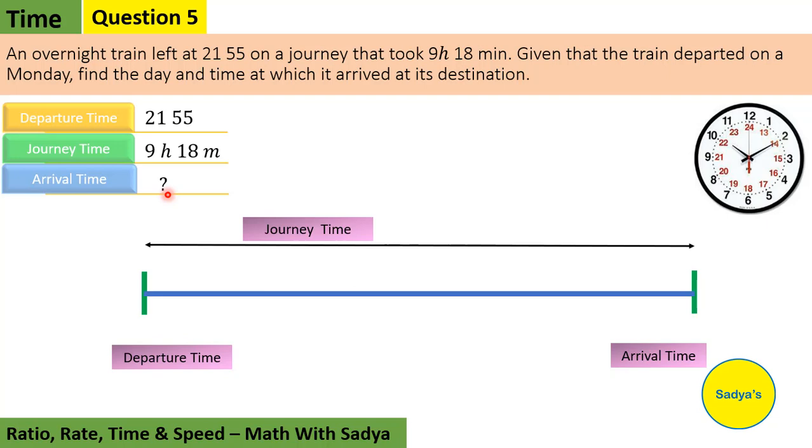So the procedure: we have a timeline. We have to mark the departure time which is 2155, journey time, and find the arrival time. Now, 2155, the nearest next hour is 22. So 22 hours. And how many minutes past 22 will it be 2155? It is 5 minutes.